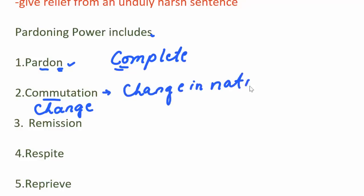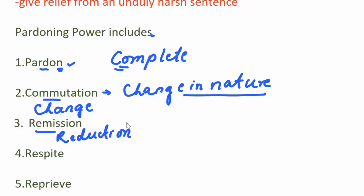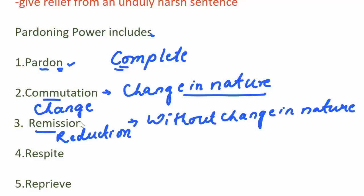Next is remission. Remission means reduction. A sentence can be reduced without changing the nature. So the difference between commutation and remission is: in commutation, the nature of the sentence is also changed, but in remission, only reduction of sentence takes place with no change in nature. For example, rigorous imprisonment will not change into simple imprisonment — only the period can be reduced.